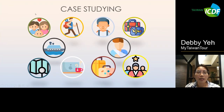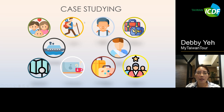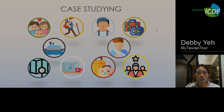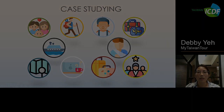So those are the two cases introduced in the first part: the family trip and the specific topic trip — including hiking, scuba diving, trekking, and cycling in Taiwan. Let's take a short break, and then we'll introduce two more cases in the following section.